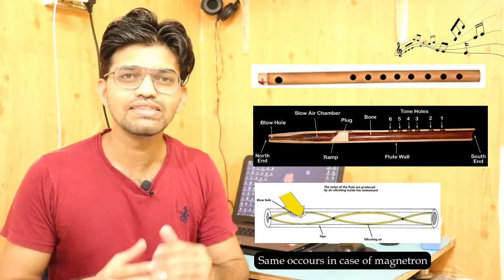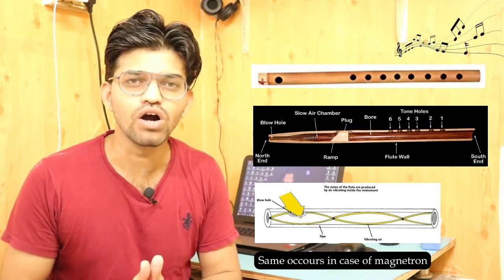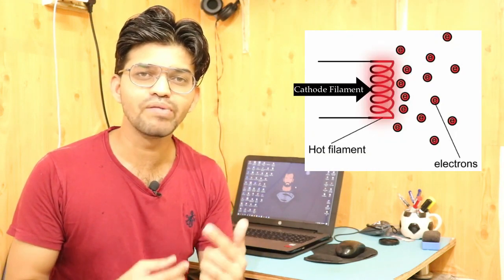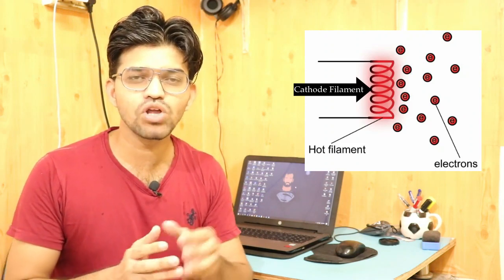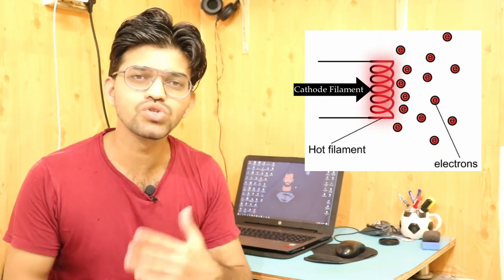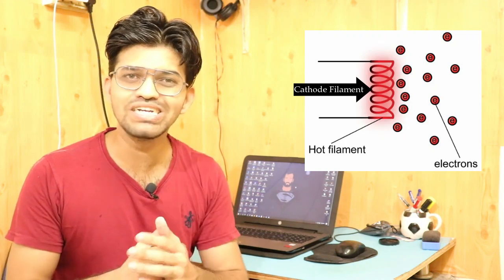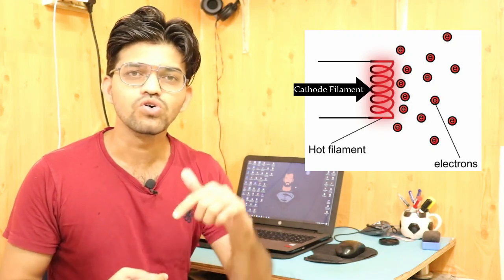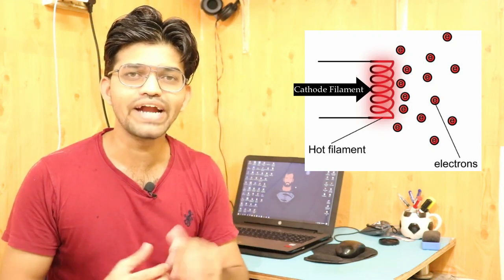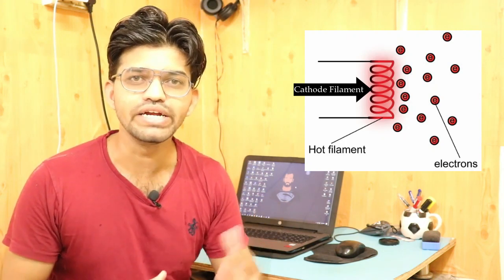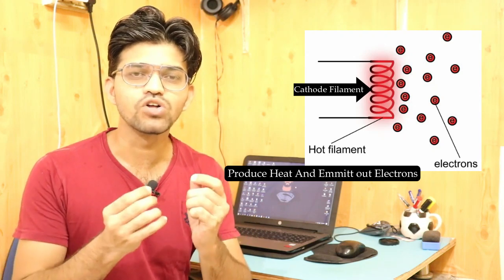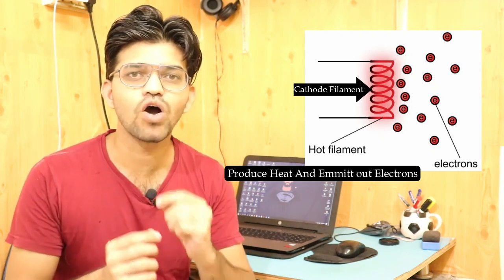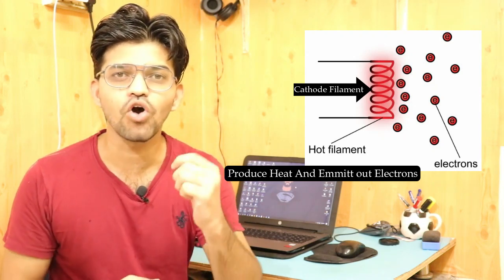This is exactly how the magnetron works. Suppose we have a cathode filament with a number of coils. If we connect that cathode filament to a battery or capacitor, electron flow starts. The electrons pass through the coils, producing heat, the filament gets heated, and electrons get emitted from that filament.